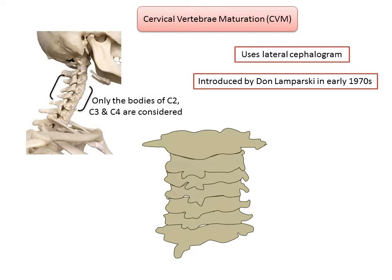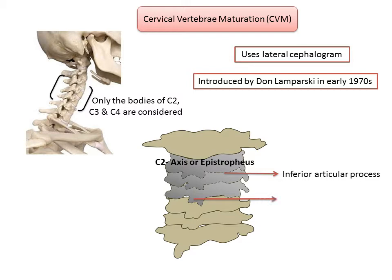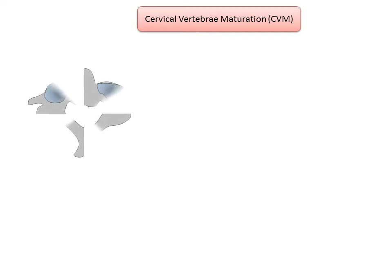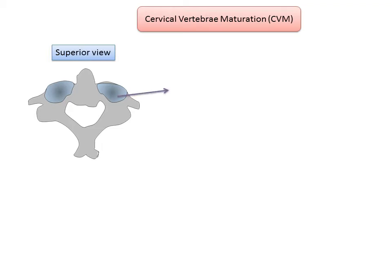Before we delve into the topic of cervical vertebral maturation, let's briefly understand the anatomical landmarks of the cervical vertebrae, focusing on C2, C3, and C4. The second cervical vertebra is also known as the axis or epistropheus. The inferior part is known as the inferior articular process, the tail region in the center is the bifid spinous process, and the extensions on the sides are known as the transverse process. In a superior view, cervical vertebrae have a superior articular facet — a depression seen bilaterally in the superior part of the vertebra — and the spinous process.